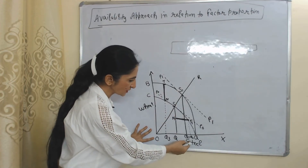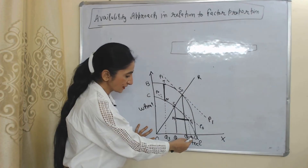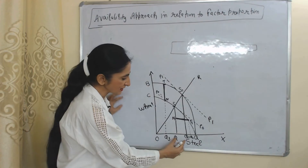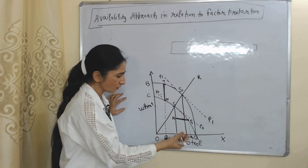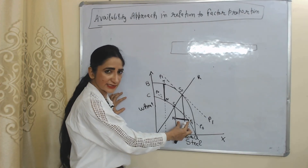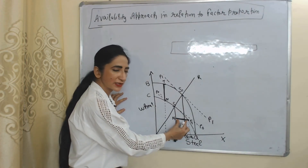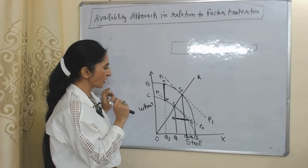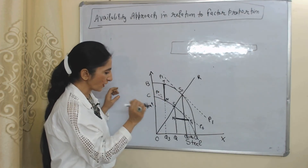Country C is producing OQ2 quantities of steel, but country C only needs OQ quantities of steel. The excess — Q to Q2, or equivalently N1T1 — is surplus steel in country C. That's why country C will do export of N1T1 quantities of steel to country B.